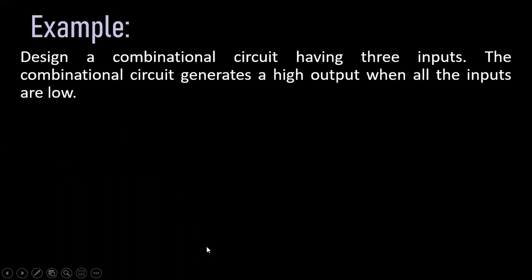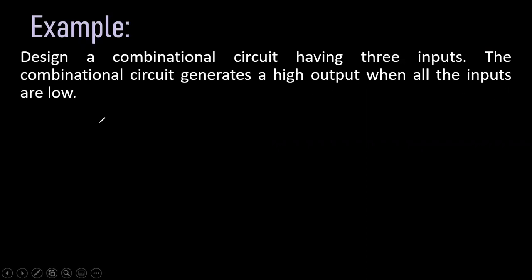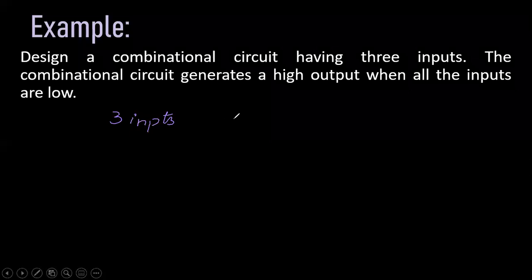Moving on to implement this by an example: first of all, the first step is to observe the problem statement. Here the problem statement is: design a combinational circuit having three inputs. The combinational circuit generates a high output when all the inputs are low. So we are observing that we have three inputs and a single output.